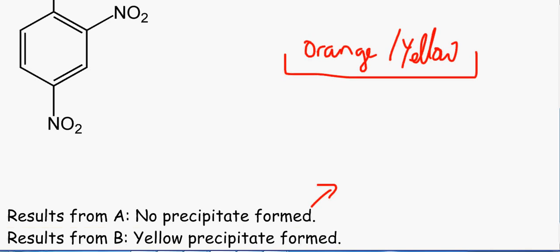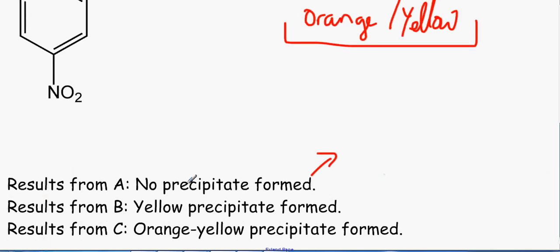And over here, we've got an orange-yellow precipitate formed. So we do have two different colours here, but we cannot assume that one is an aldehyde and one is a ketone just from the colours. But we do know that we do have carbonyl groups here.